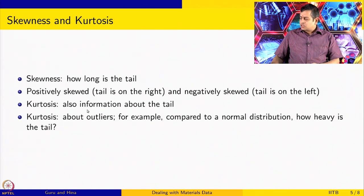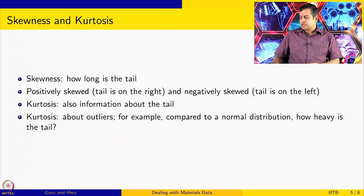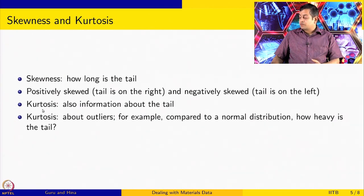Kurtosis is also information about the tail. It specifically talks about outliers and gives you information about how heavy the tail is in the given data compared to a normal distribution. By looking at these two quantities — skewness and kurtosis — it is possible to find out what the best fit in terms of probability distribution for the data could be, and that is what we are going to do.